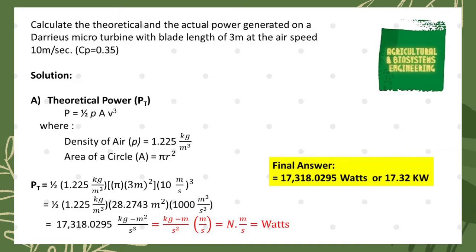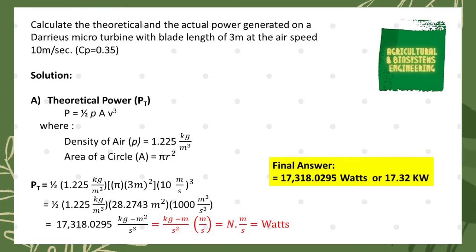So P equals one-half times the density of air, which is 1.225 kg/m³, times π times (3 m)², times the cube of the velocity, which is (10 m/s)³. This gives us one-half times 1.225 kg/m³ times 28.2743 m² times 1,000 m³/s³. Multiplying these together gives us 17,318.0295 kg·m²/s³.